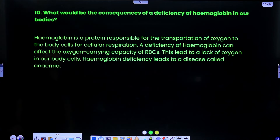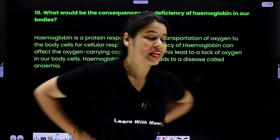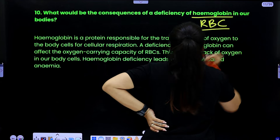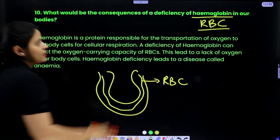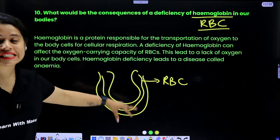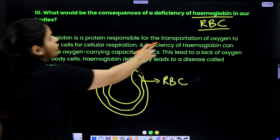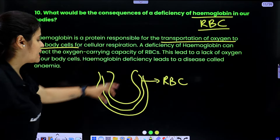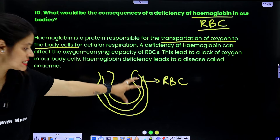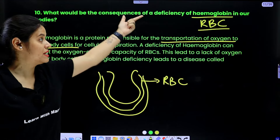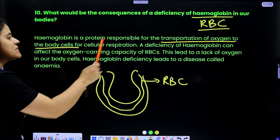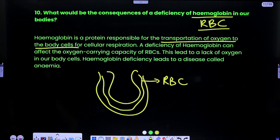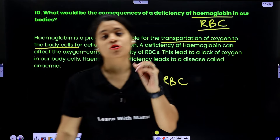Question 10: what would be the consequences of a deficiency of hemoglobin in our body? Hemoglobin is found in red blood cells and is a protein responsible for the transportation of oxygen to the body cells. A deficiency of hemoglobin can affect the oxygen-carrying capacity of red blood cells. This leads to a lack of oxygen in the body. Hemoglobin deficiency leads to a disease called anemia, meaning hemoglobin is very important for our body.